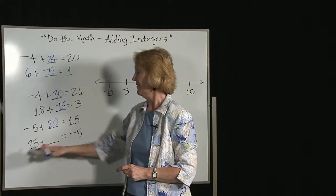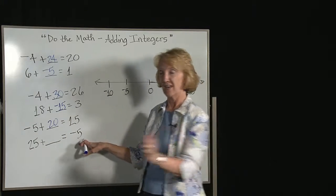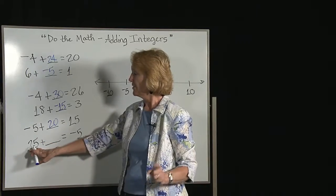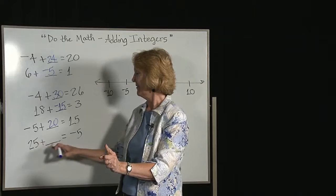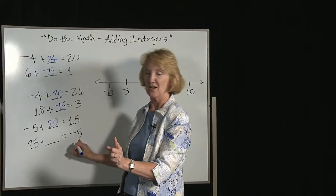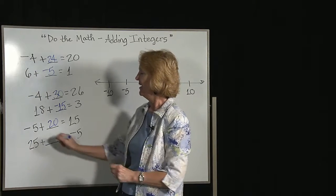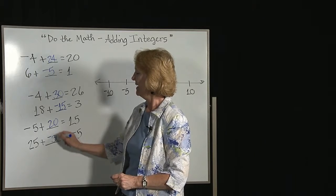If you're at 25 and you go backwards to negative 5, to get from 25 down to 0 you had to have negative 25. To get from 0 to negative 5, it was another negative 5. Grand total, negative 30.